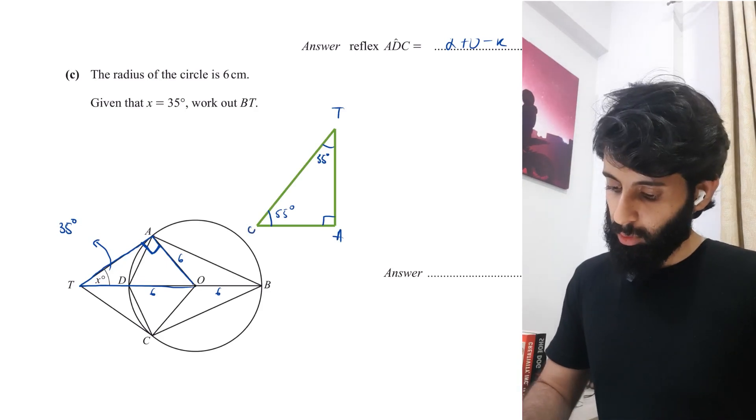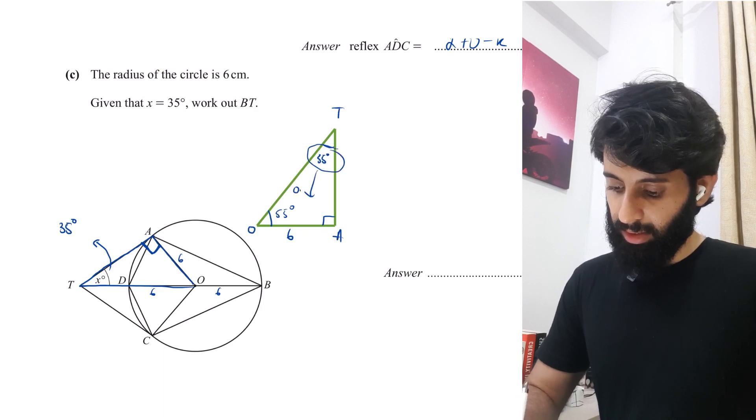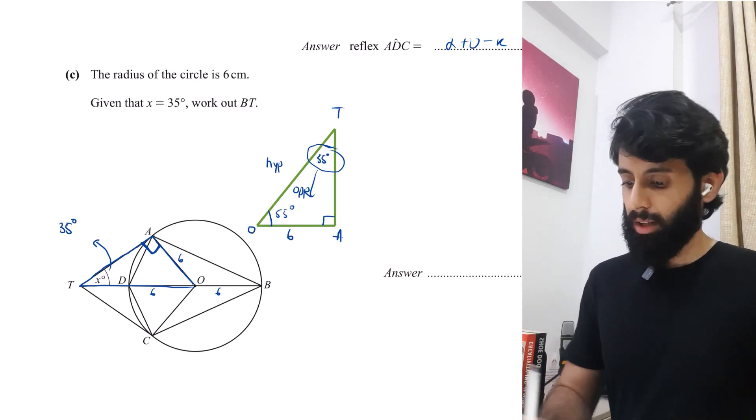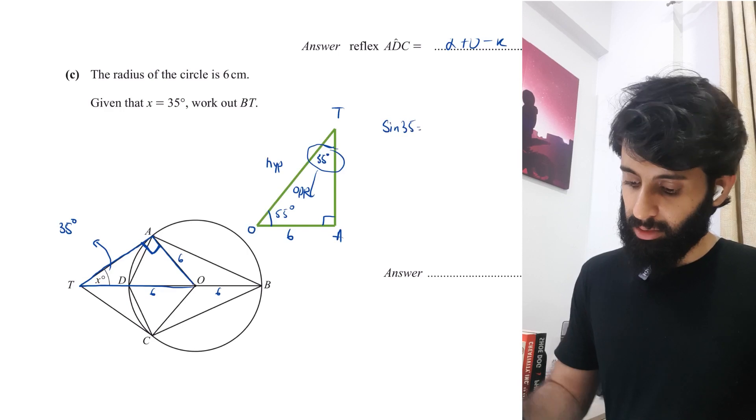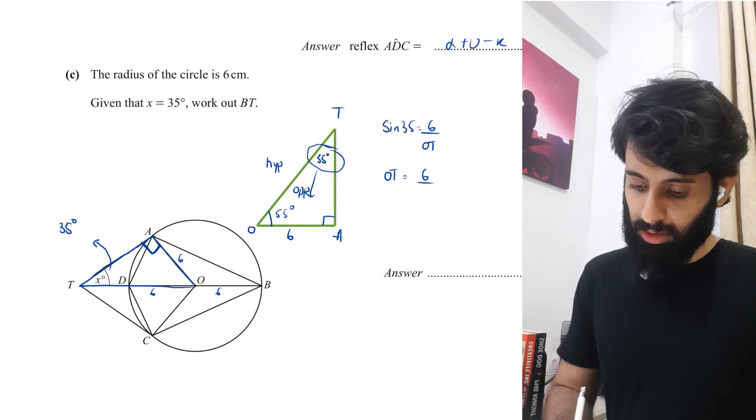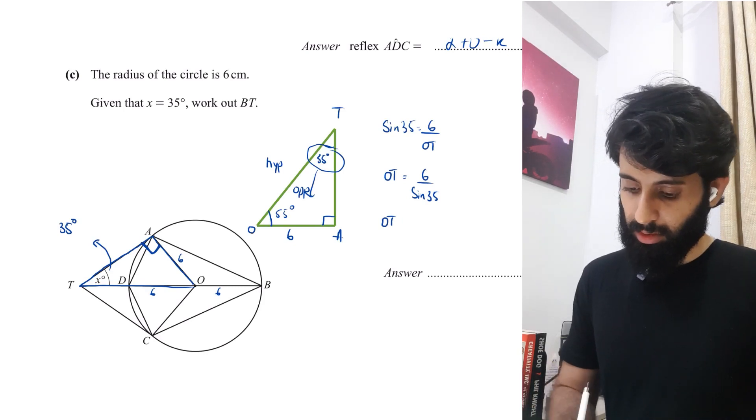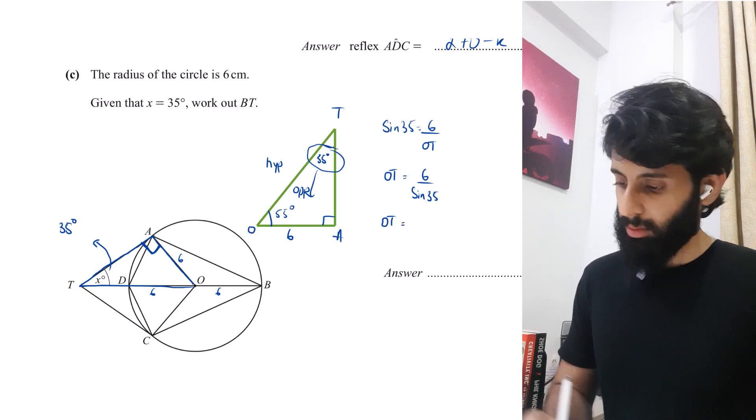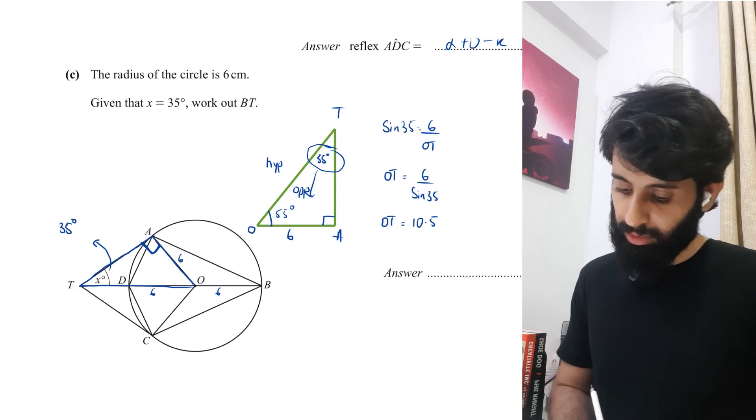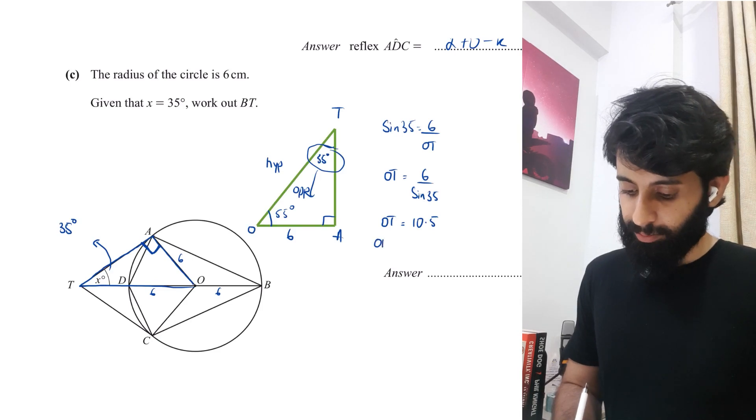We know OA which is 6. In order to work out OT, I'm going to use this angle. The length I have is the length opposite to 35. The length I need to find is the hypotenuse length. So that means I got to use sine. Sine 35 equals opposite, which is 6, upon hypotenuse, which is OT. So OT equals 6 divided by sine 35, which is going to be equal to 10.5. Now that you have OT, all you got to do is add OB to it. So OT plus OB is what you want because that's going to give you the entire length BT. 10.5 plus 6 equals 16.5, which is your final answer.